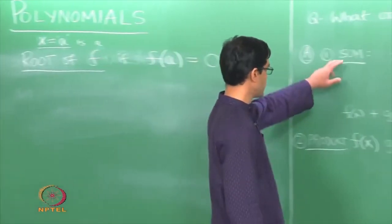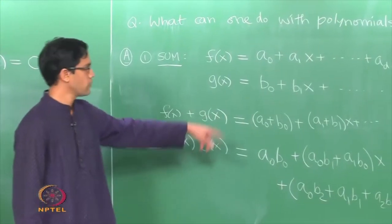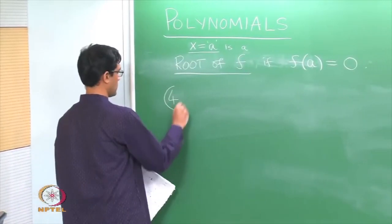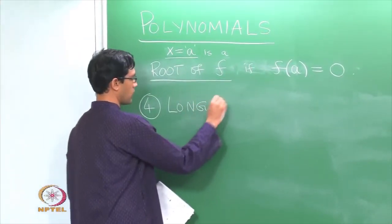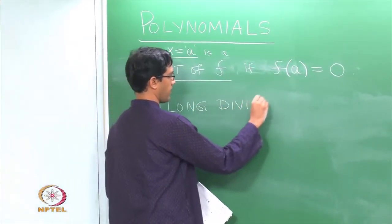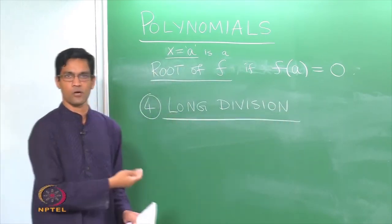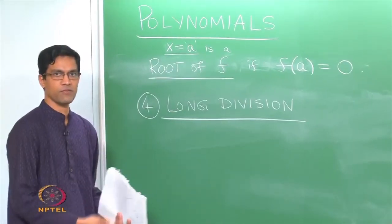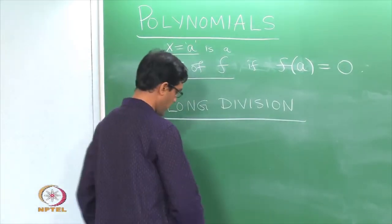We have looked at 3 things: you can take the sum of 2 polynomials, you can take the product, you can substitute values for X, and there is another important operation called long division. So let me recall what long division of polynomials is — it is a procedure which must be very familiar, so let us just do it by example.